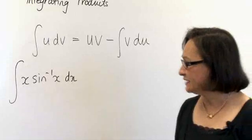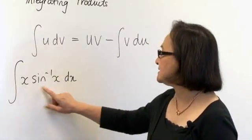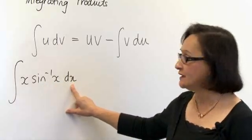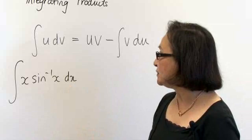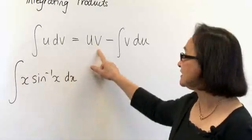We have two choices here. x could be u and sine to the minus 1 of x dx could be dv. But if we did that, then we would need to integrate sine to the minus 1 of x to get v.